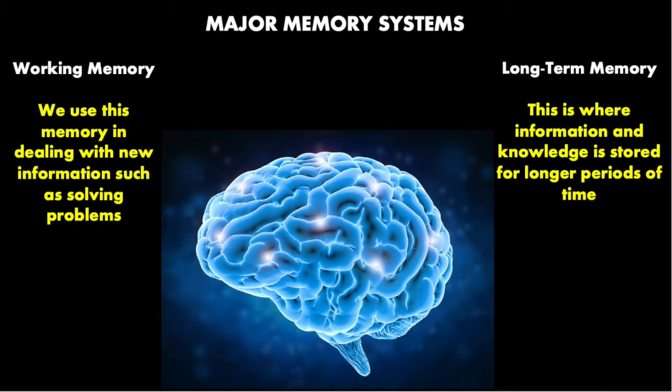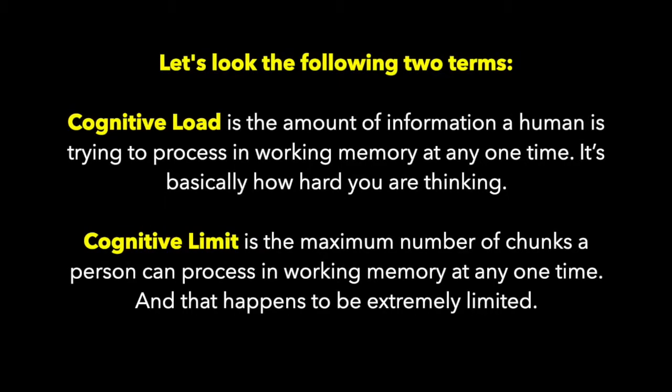Our long-term memory, on the other hand, is where acquired knowledge and information is stored for longer periods of time, sometimes indefinitely. Let us consider two important terms here: cognitive load and cognitive limit. Cognitive load is the amount of information a human is trying to process in working memory at any one time — it's basically how hard you're thinking. And cognitive limit is the maximum number of chunks a person can process in working memory at any one time, and this limit happens to be extremely limited.